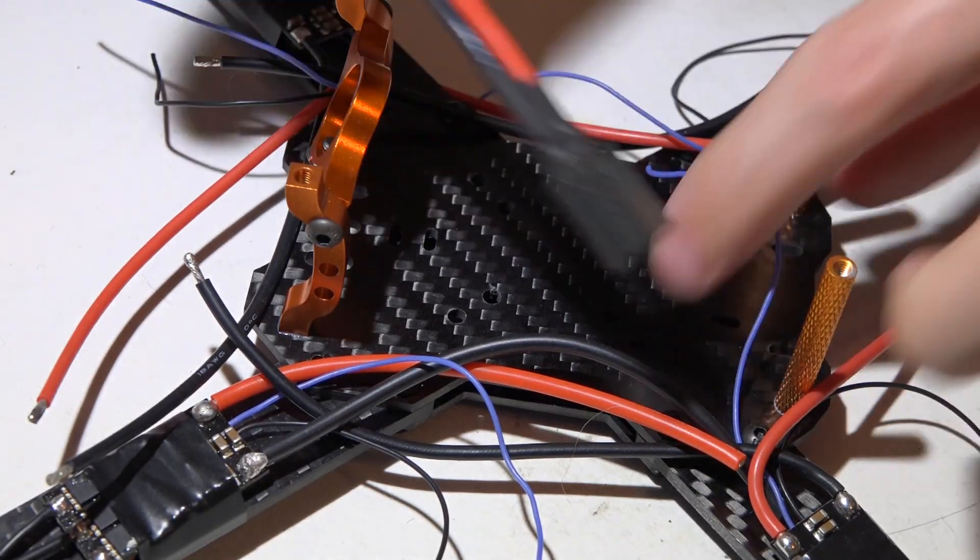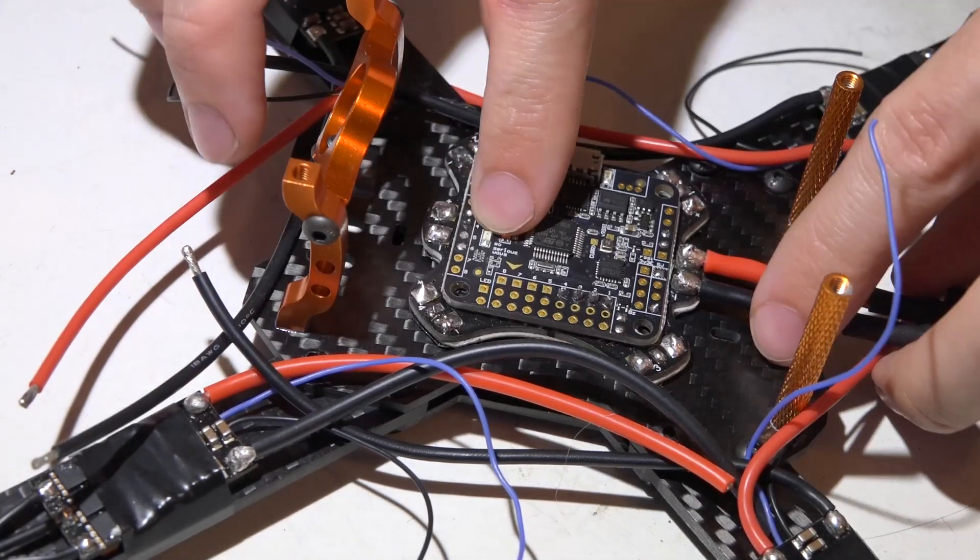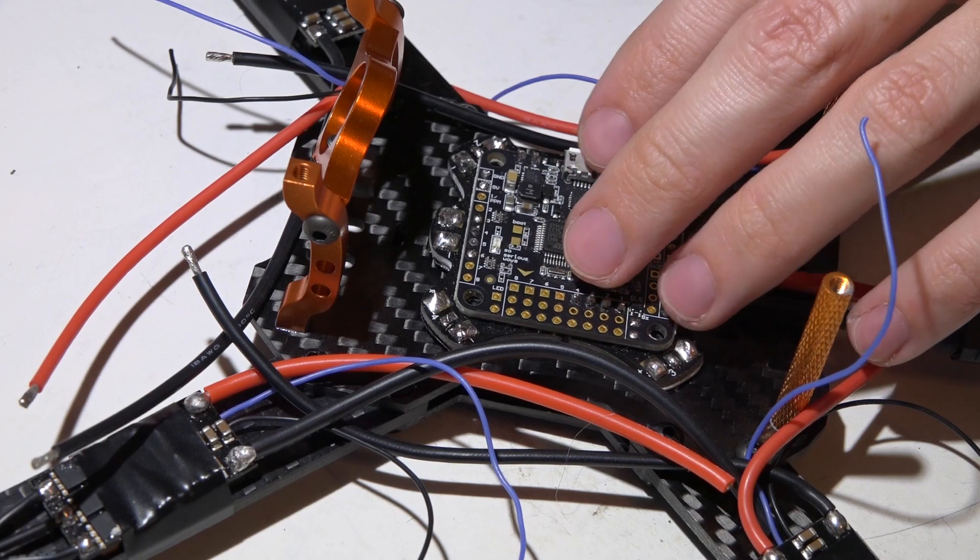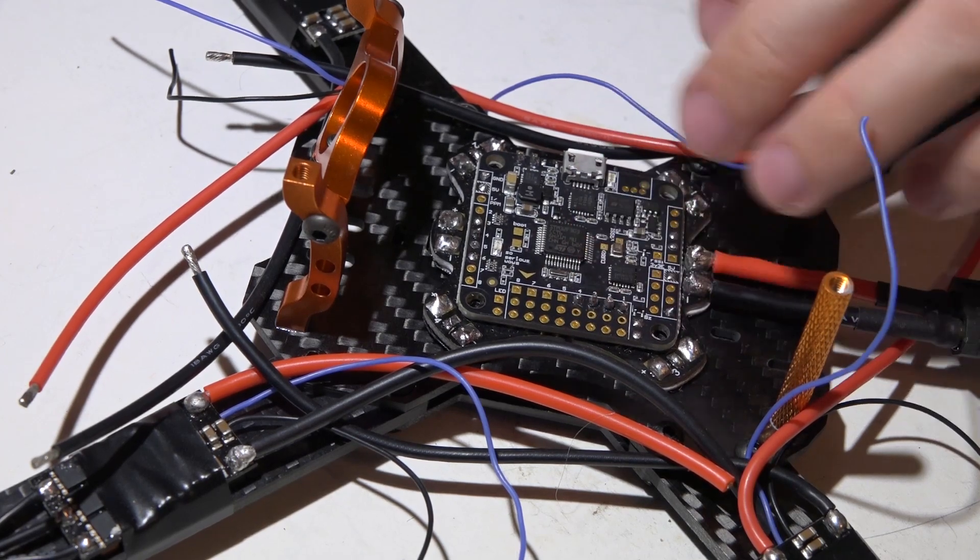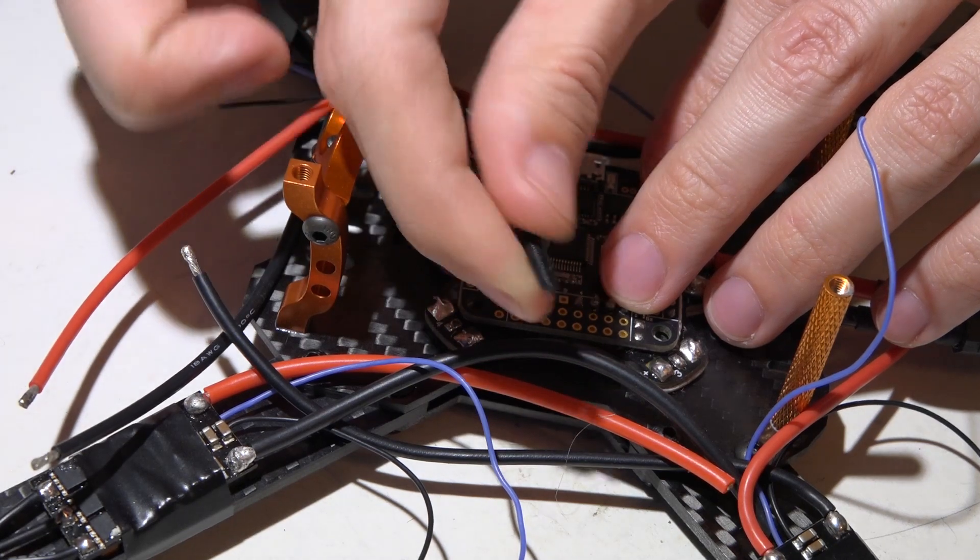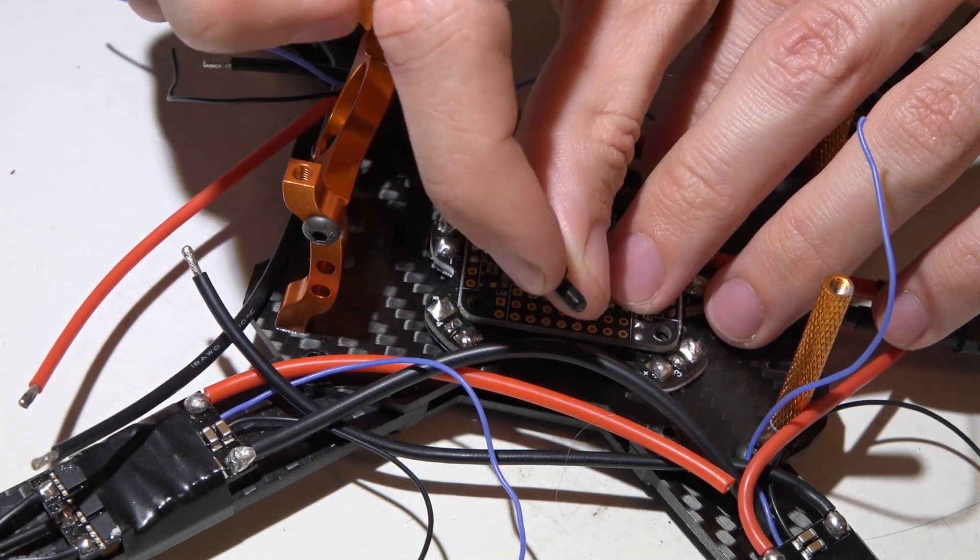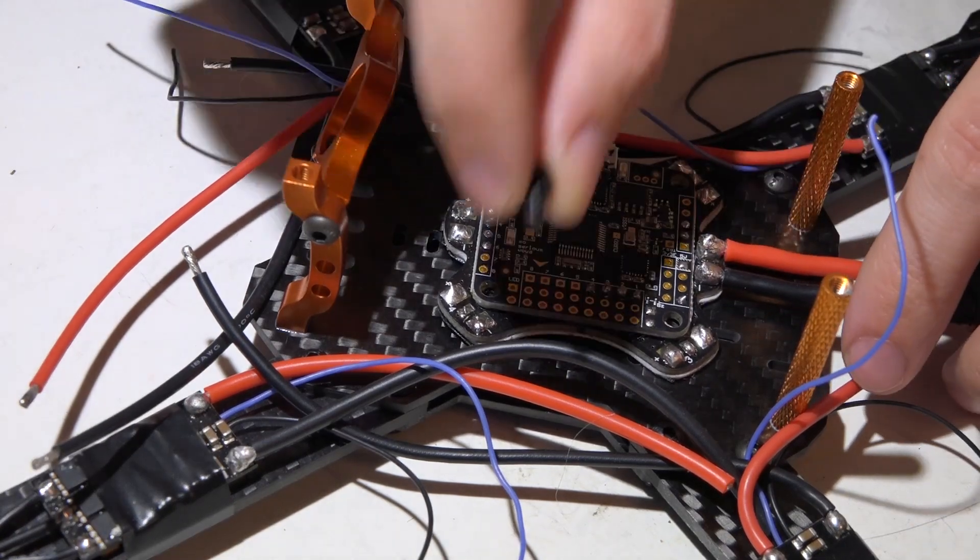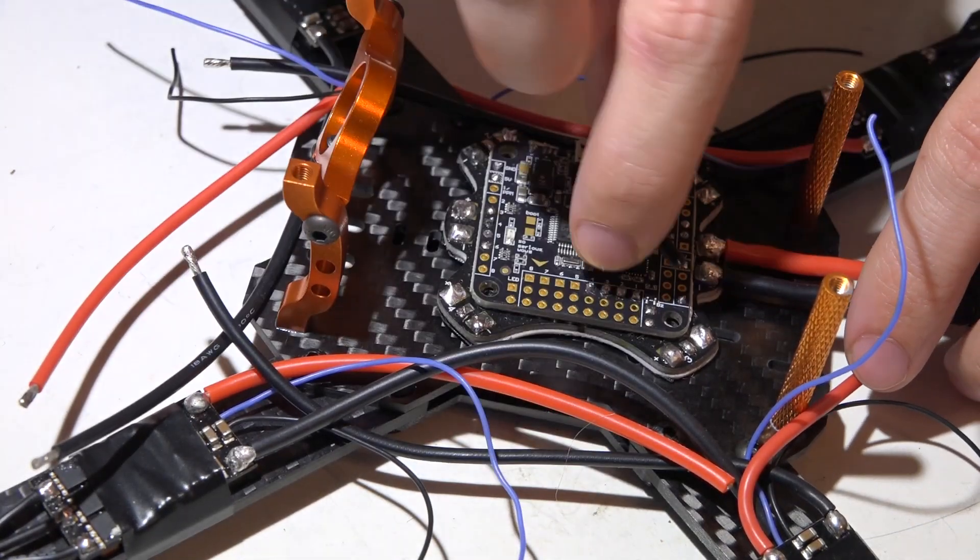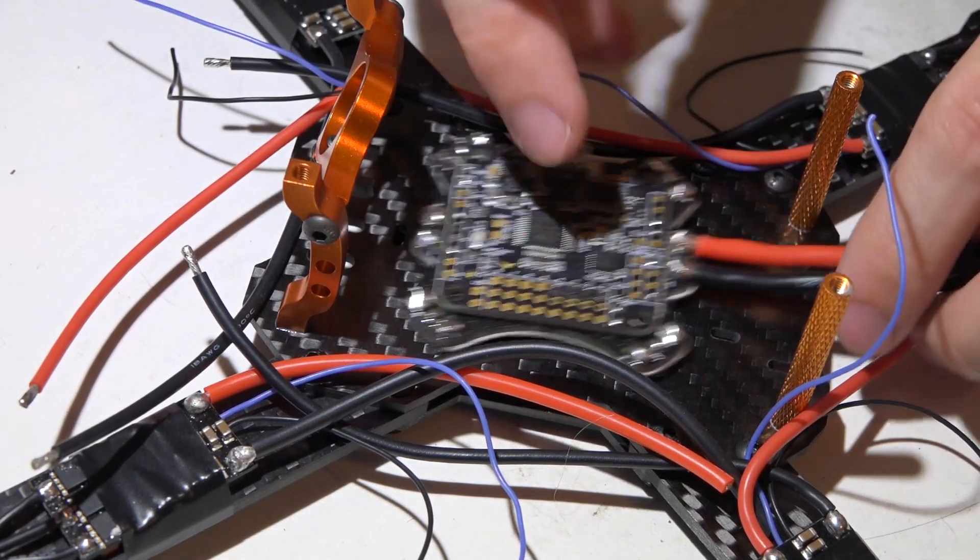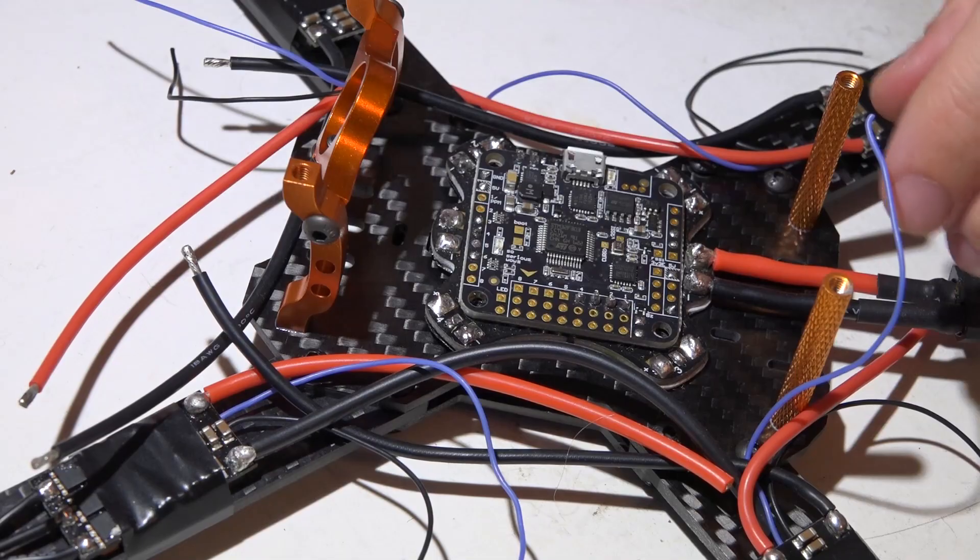So now with that out of the way, as far as mounting this, anytime you mount PDBs and flight controllers you preferably want to use nylon nuts, standoffs, bolts, washers, all that stuff, because nylon does not transmit vibrations as much as steel does. So for this one, because my bolts will be contacting the flight controller, I will be using nylon even though it is already soft mounted. This will help it a little bit more.